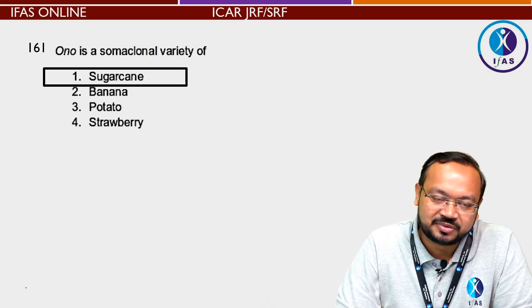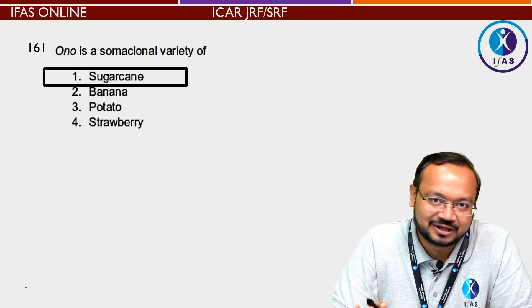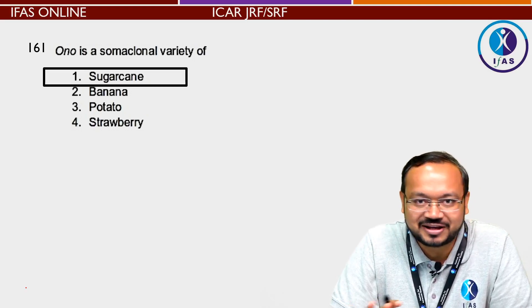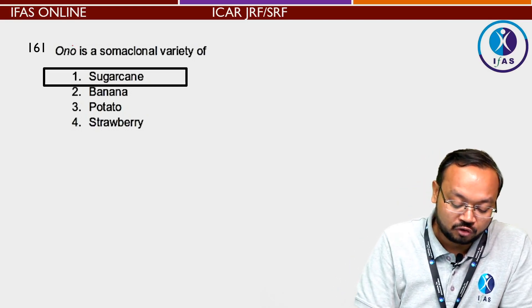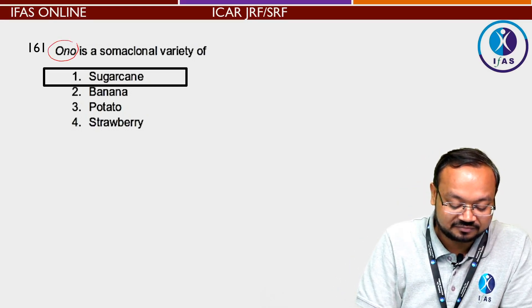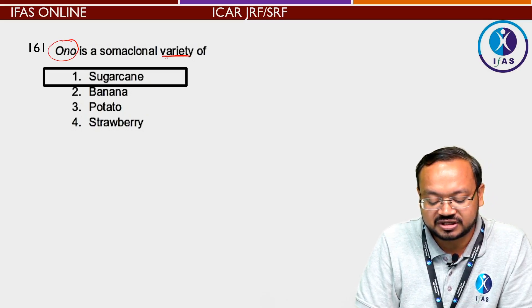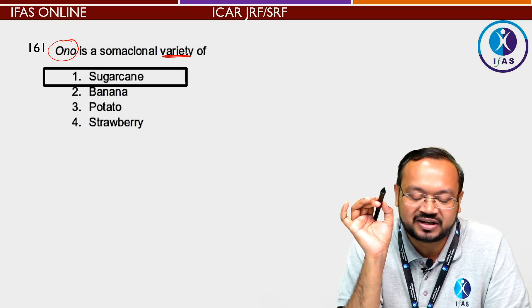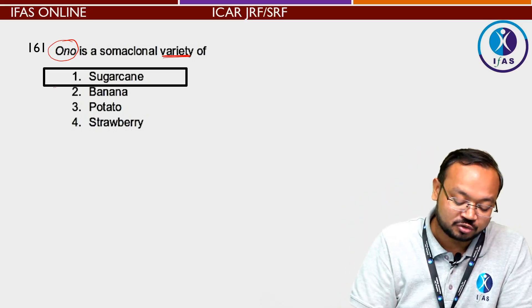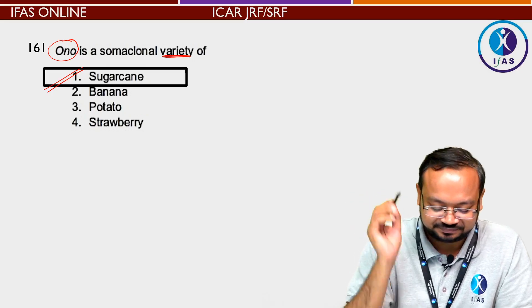Next question: एक particular plant की somaclonal variety का नाम पूछा गया है। यह sugar cane की somaclonal variety है — इसका नाम याद रखिए।